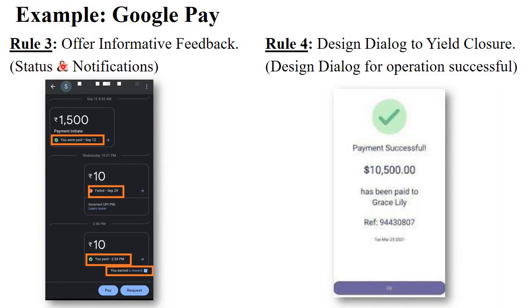The third rule is to offer informative feedback. When you use the Google Pay application to transfer or receive money, proper feedback is given each time. As shown in this screenshot, when you pay ₹15,000, it gives the message that you paid on September 12th. If a transaction fails, it gives the feedback that the transaction failed on September 29th. This is called offer informative feedback.